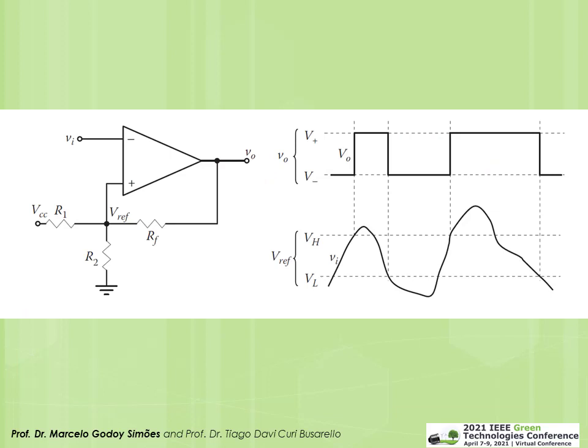Here we have an example of a positive-feedback signal, making this a comparator. We calculate R1, R2, and Rf to define an upper threshold VH and a lower threshold VL. The output V₀ takes a noisy input signal Vi and provides a clean output depending on whether the signal is within or outside the threshold window. I recommend reviewing a good op-amp textbook to properly design comparators with hysteresis.